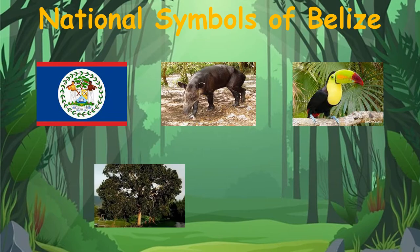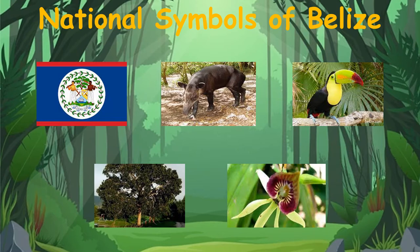This is the mahogany tree. This is the mahogany tree and that's our national tree. And this is our national flower, the black orchid.